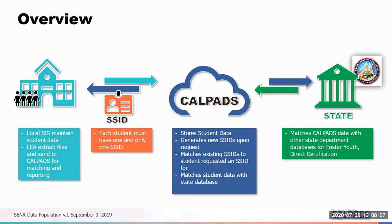Here is an overview of the data flow. At the local level, you have a student information system that maintains your students' data. You extract files from this system and send it to CALPADS for matching and reporting. Each student submitted to CALPADS is assigned a unique SSID. CALPADS stores the student data you submit, can generate SSIDs upon request, and matches student demographic information to the requested SSIDs. It also matches student data with state databases outside of CALPADS, such as the Department of Human Health and Services for foster youth or direct certification reporting.